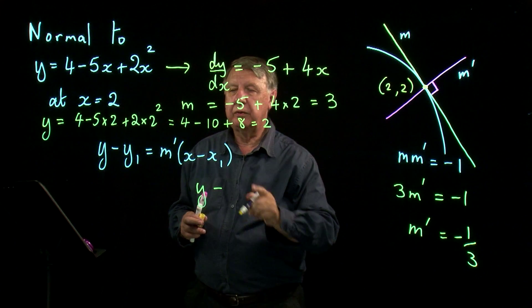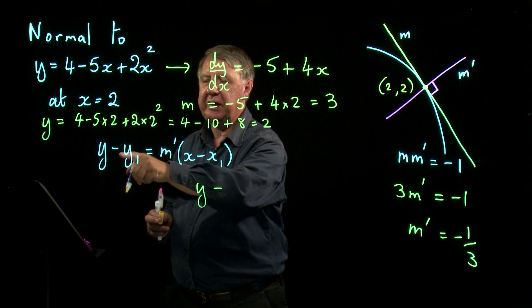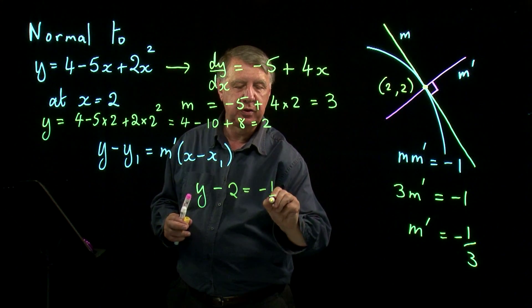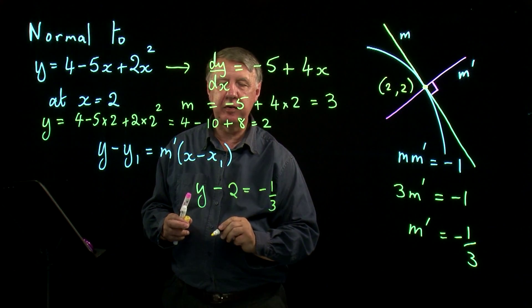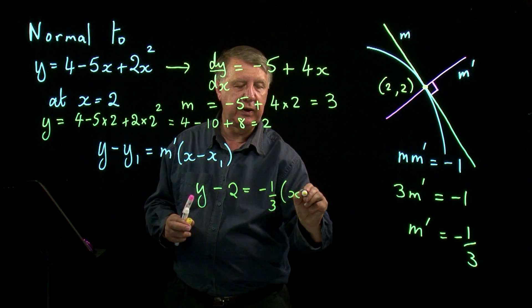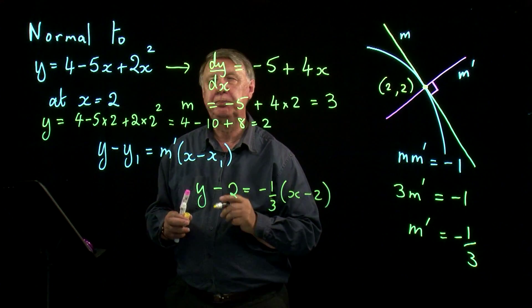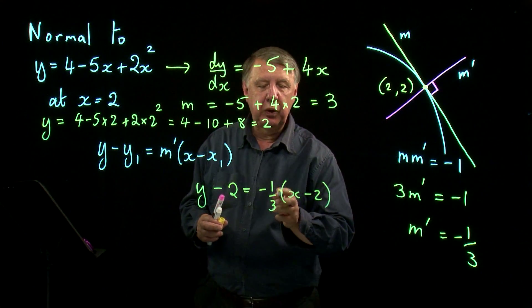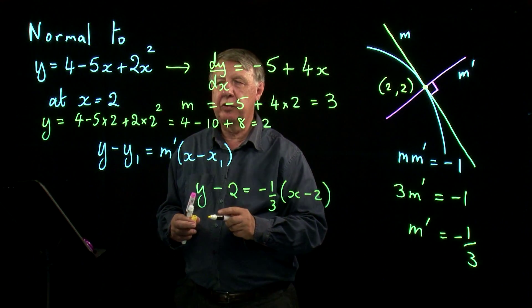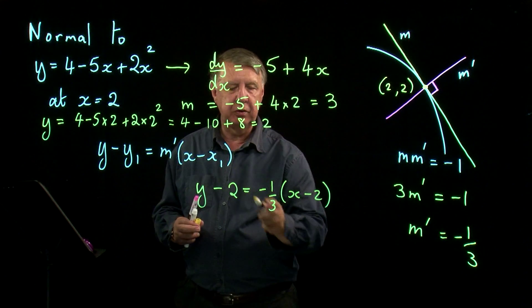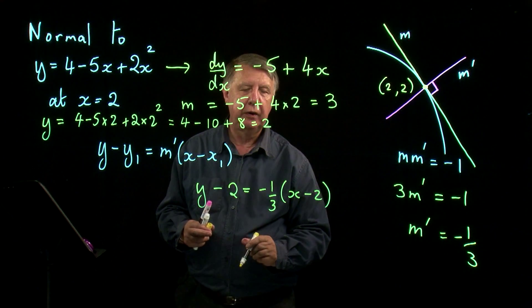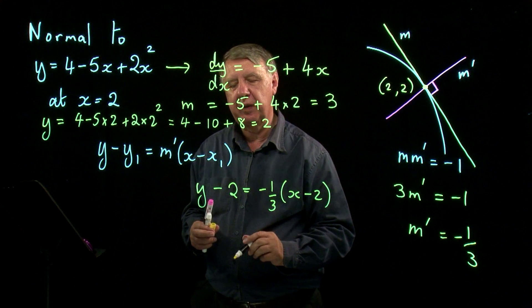So the equation becomes then y take away 2 equals m dashed which is negative a third times x take away 2. Now when we looked at the stuff on the equation, we don't like these numbers here. What's the easiest way to get rid of that?